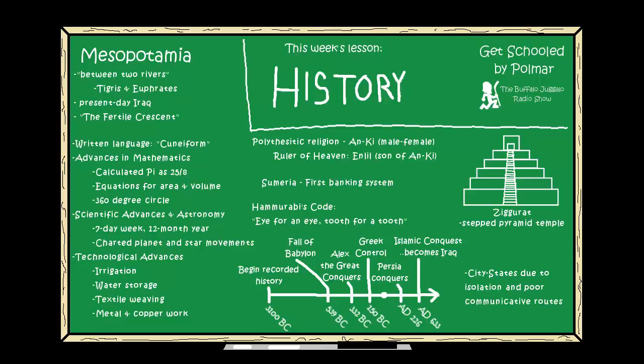Mesopotamians believed that their kings and queens came from the city of gods. They also believed that the world was a huge flat disk surrounded by water above and below, and that the universe was born out of an enormous sea. They were like the first civilization known to bury their dead. Their temples — known as ziggurats — were stepped pyramids, the most well-known type of Mesopotamian architecture, and among the longest standing still.